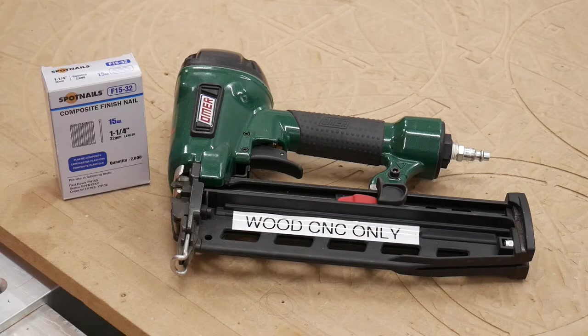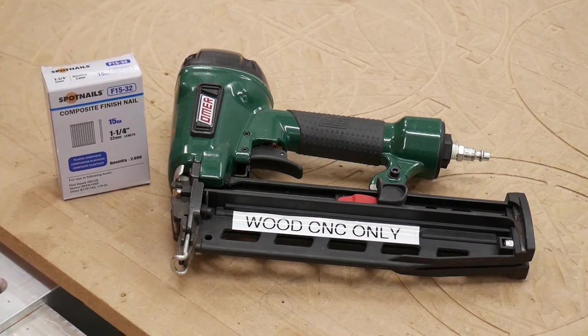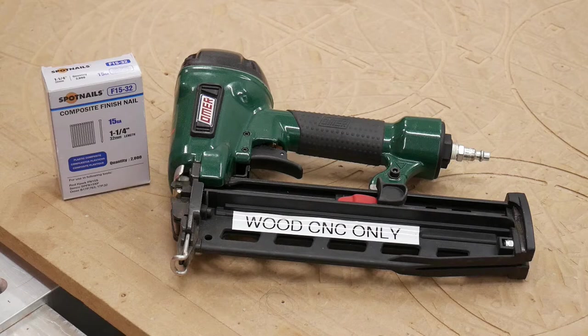The most common method is attaching the material with a brad nailer and composite brads. Composite brads are made of a plastic resin that won't damage the bit if routed. You should never use steel fasteners. If accidentally cut, they can mar or even shatter the bit.